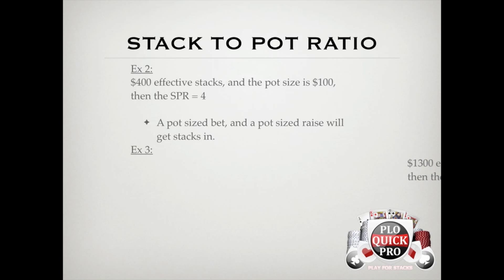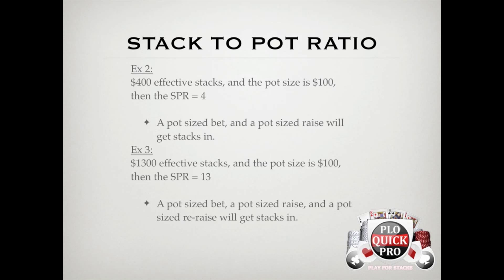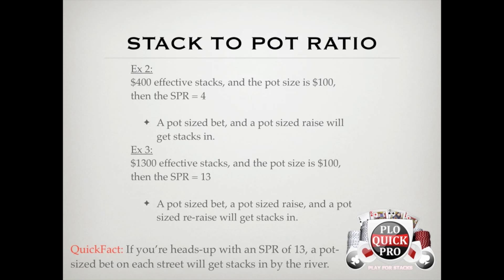In our last example, the effective stacks are $1,300 and the pot size is $100, which means the SPR is 13. A pot-sized bet, a pot-sized raise, and a pot-sized re-raise will be enough to get stacks in. Similarly, if you bet pot on the flop, bet pot on the turn, and pot again on the river, that's going to be enough to get stacks in as well. Quick fact: if you're heads up with an SPR of 13, a pot-sized bet on each street will get stacks in by the river — put that one in your back pocket.